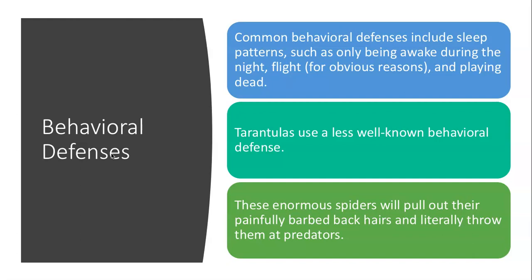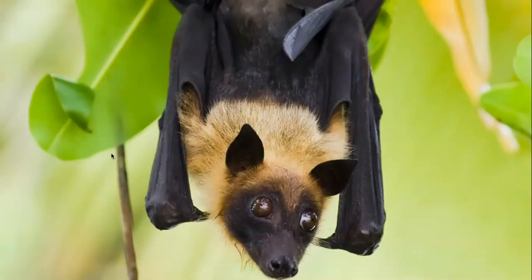Now let's get into behavioral defenses. Some common behavioral defenses include sleep patterns — such as being nocturnal, meaning only awake at night — flight, for obvious reasons, and playing dead. Tarantulas use a less well-known behavioral defense where they can pull out their painfully barbed back hairs and throw them at predators. It's like throwing a spear — really impressive and kind of medieval, but they can do that.